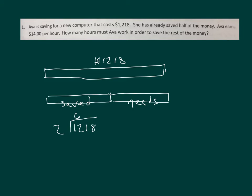12 divided by 2 is 6. 6 times 2 is 12, 12 minus 12 is 0. Bring down the 1. 1 divided by 2 is 0, 0 times 2 is 0, 1 minus 0 is 1. Bring down the 8. $609 is how much she's saved so far. If that's how much she's saved, that's also how much she needs. So she needs $609.